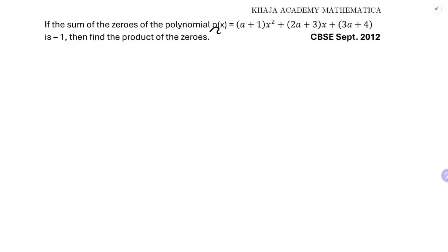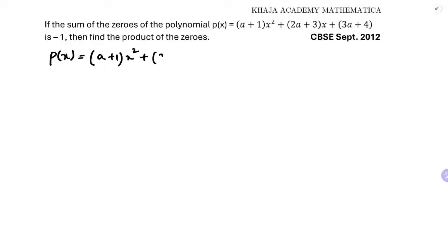If the sum of the zeros of the polynomial p(x) = (a+1)x² + (2a+3)x + (3a+4) is minus 1, find the product of the zeros. The polynomial is given and the sum of the zeros is minus 1.